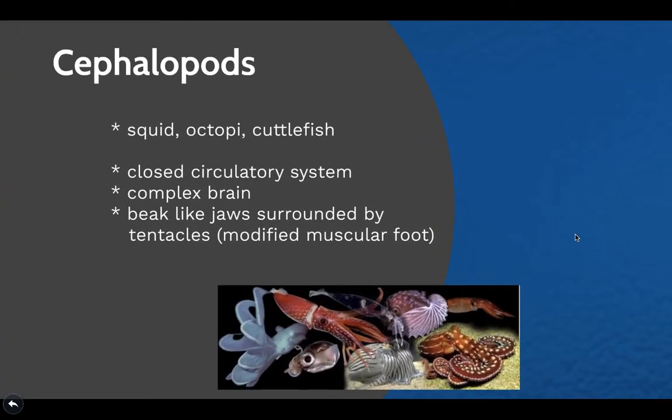A notable type of mollusca is the cephalopod clade, which includes squid, octopi, and cuttlefish. These organisms have a closed circulatory system, a complex brain, and beak-like jaws surrounded by tentacles — which can be thought of as a modified muscular foot.